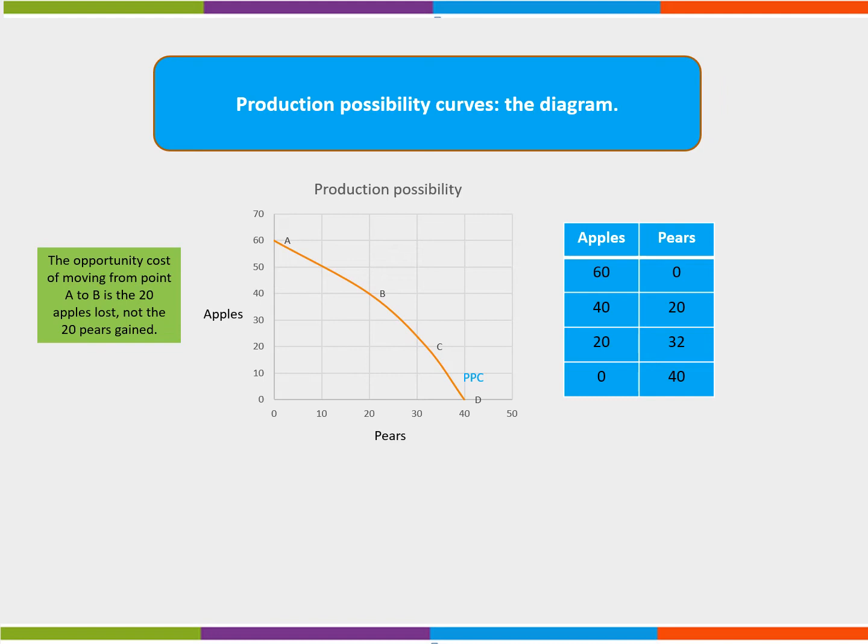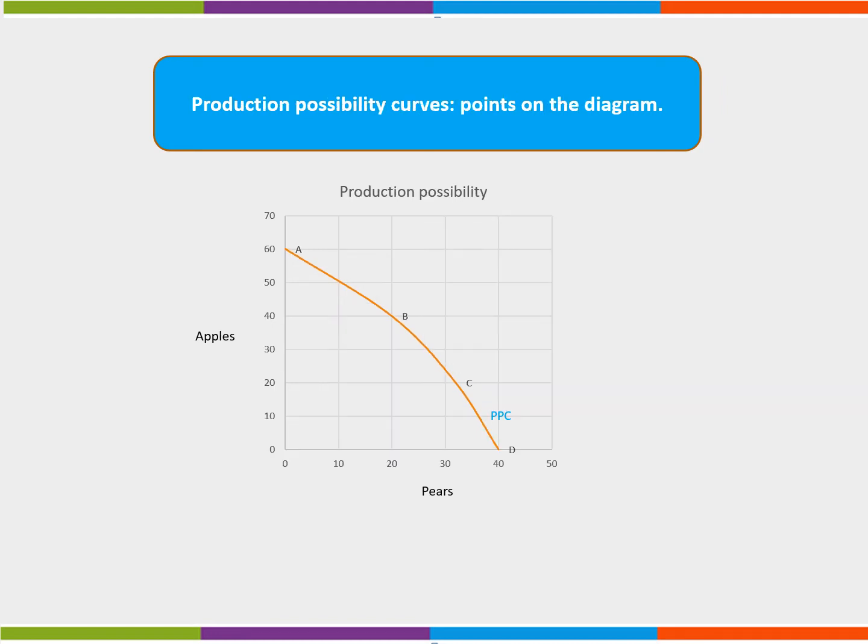Why not pause the video and work out the opportunity cost of moving from point D to point C. Here the opportunity cost is 8 pears, that is 40 minus 32. Producing anywhere along the PPC, for example points A to D, shows a full use of resources.